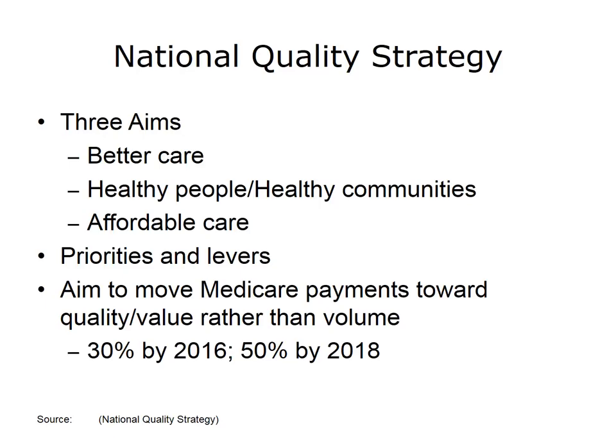The National Quality Strategy was mandated by the Affordable Care Act and centers on three aims: better care, healthy people and communities, and affordable care. These aims are operationalized through several priorities and levers — tools or mechanisms by which organizations can work to improve health care quality. The NQS sets a framework to ensure that federal health programs are redesigned to improve quality, that the delivery system is engaged in quality improvement reforms, and that we have robust measurement of care processes and outcomes.